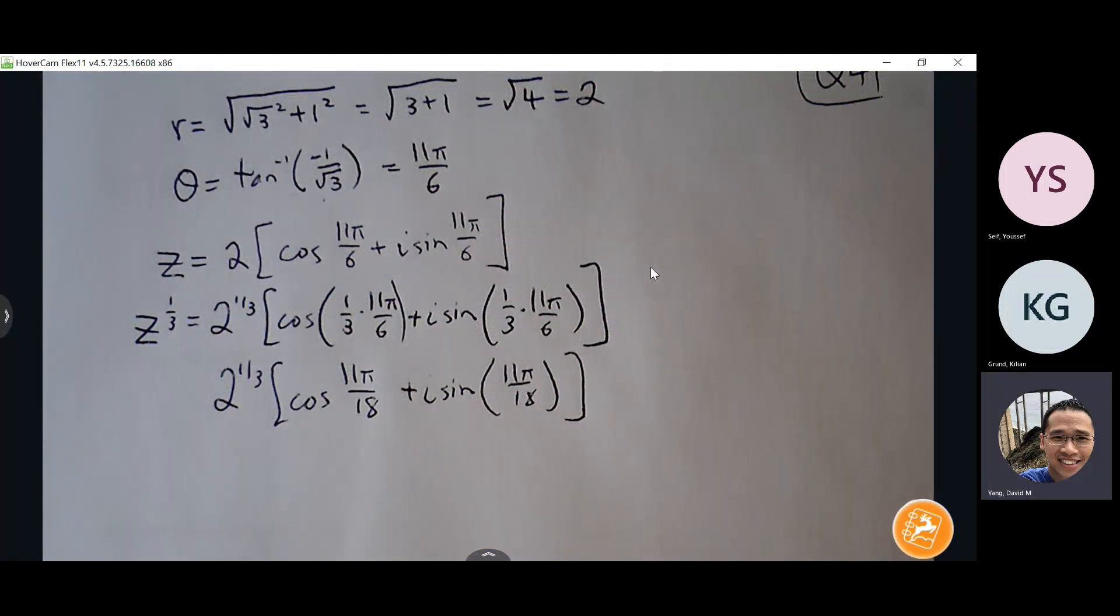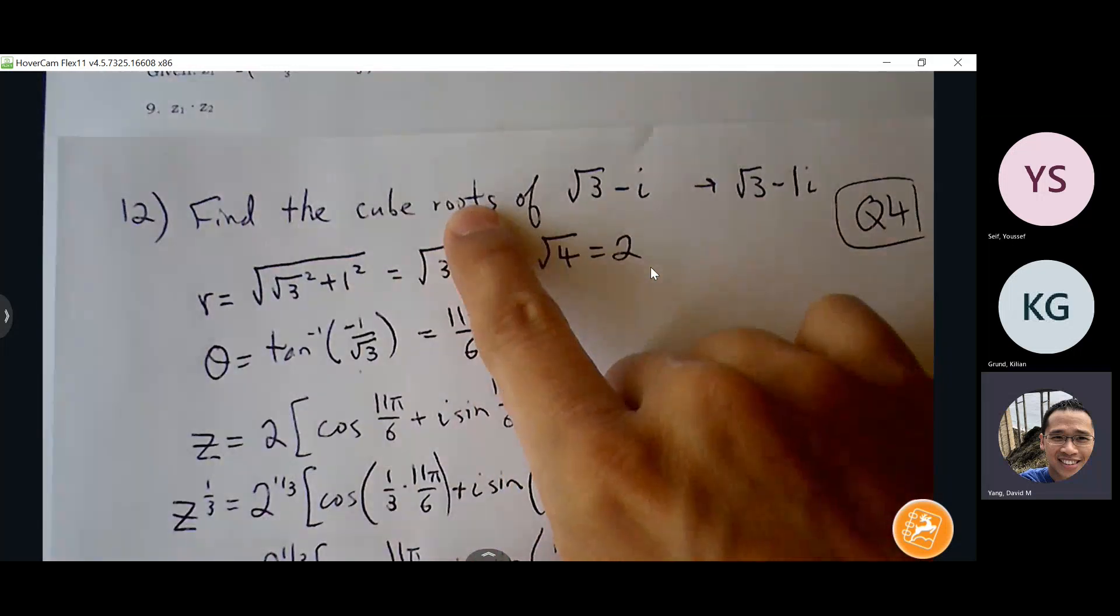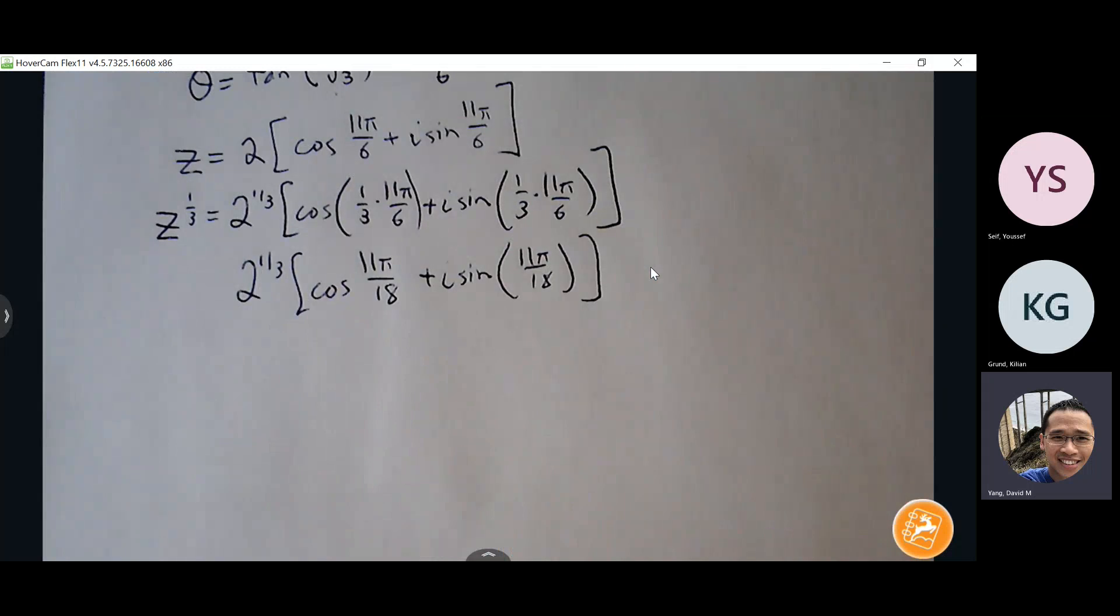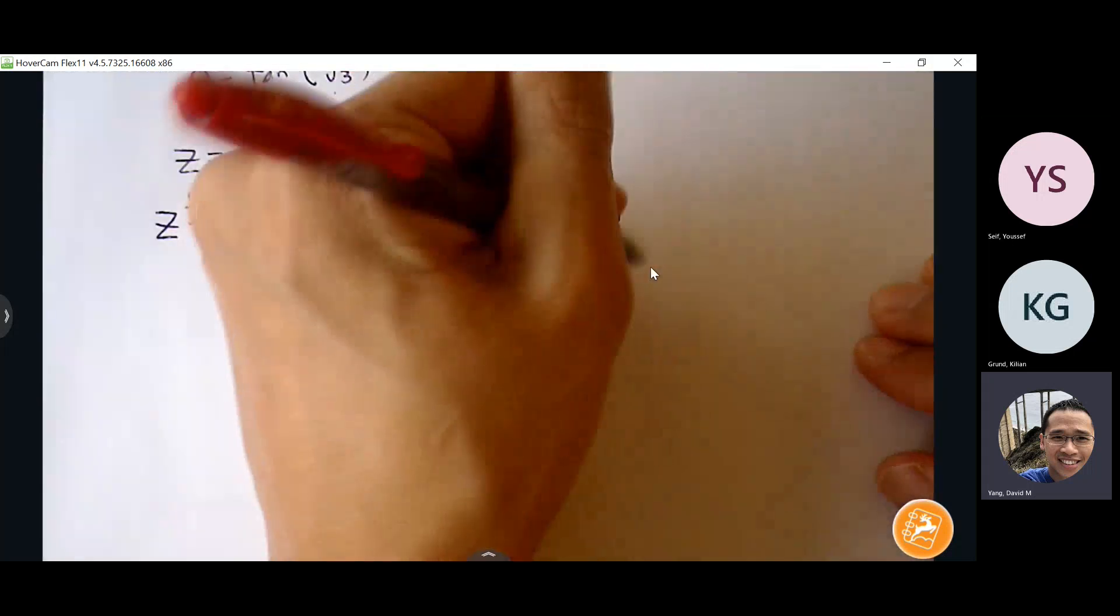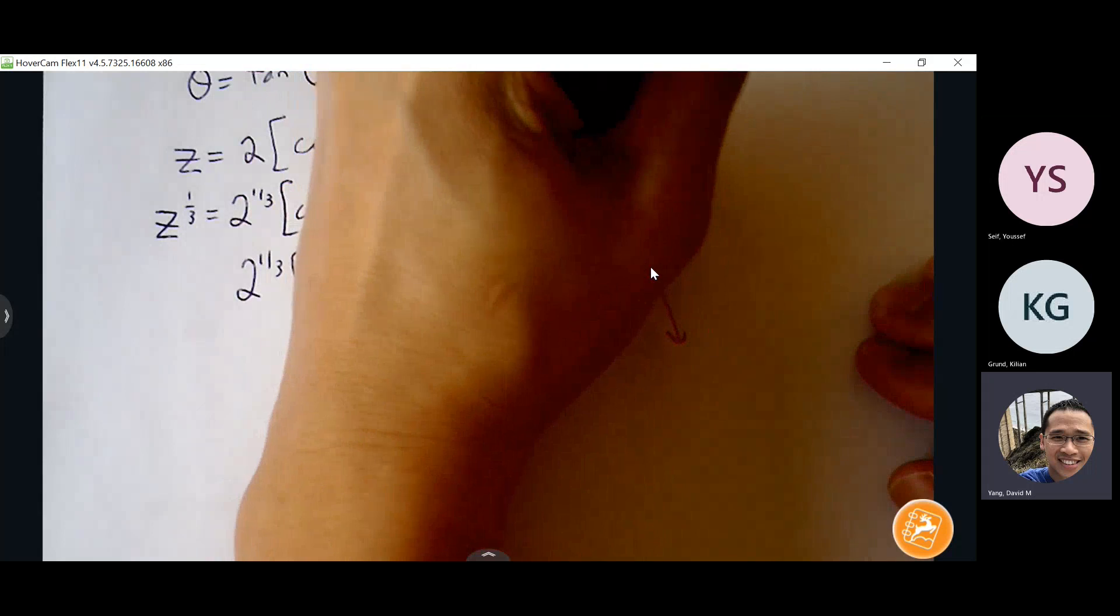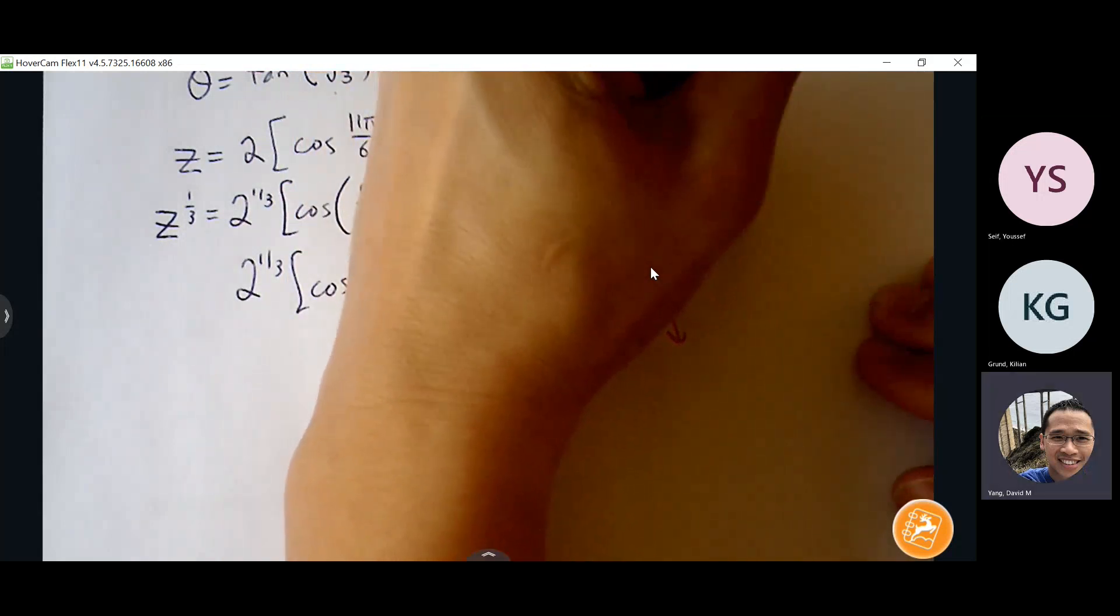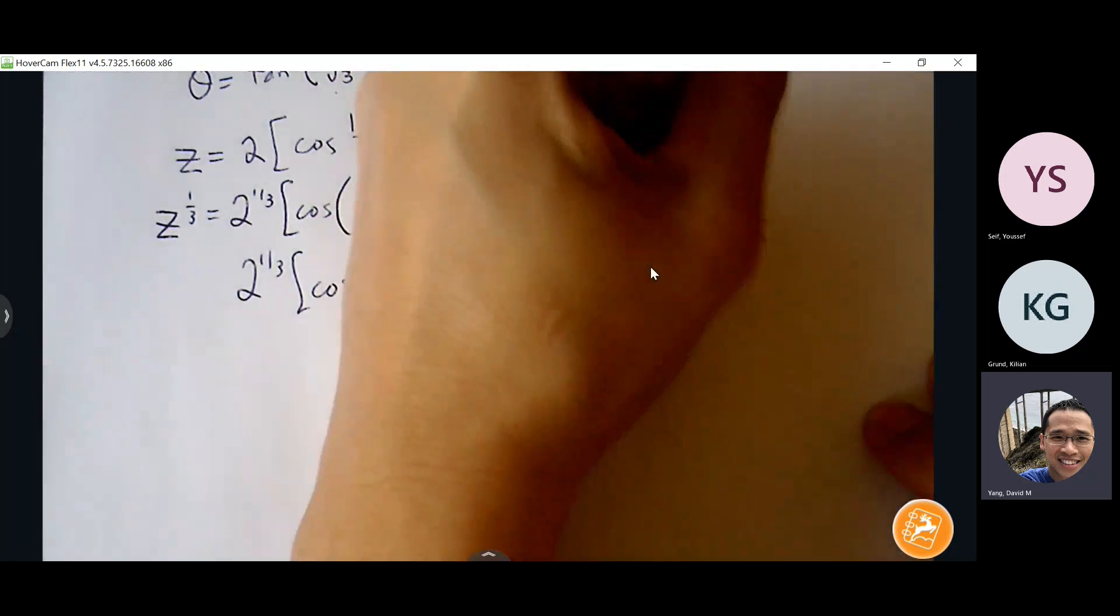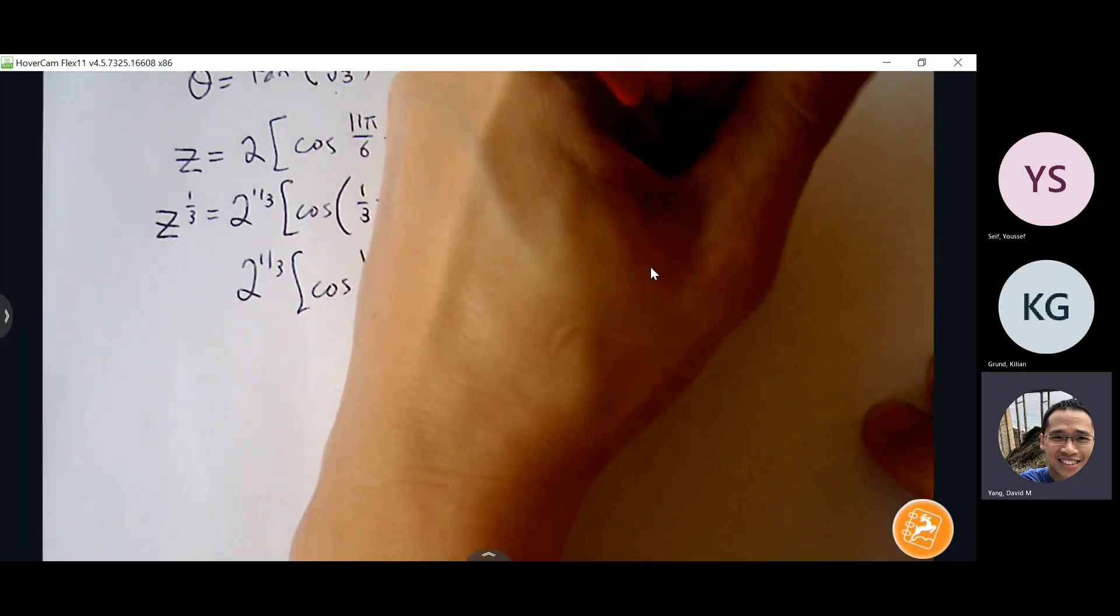Okay, so this is my first solution. I need to find two more because cube root means I'm looking for three solutions because n equals 3. So then to find my other solutions, I'm going to go through my pattern here. So my pattern is add 2 pi over n. My n is 3, so I'm going to add 2 pi over 3.